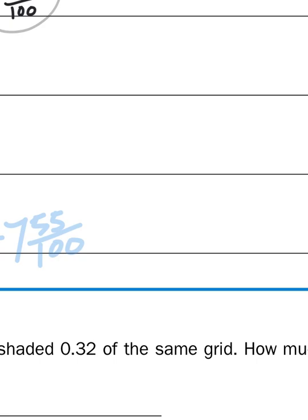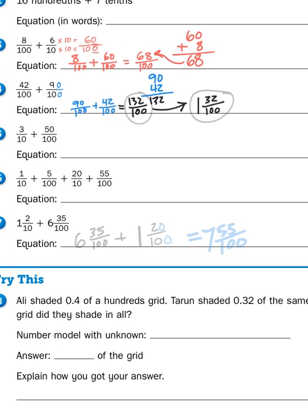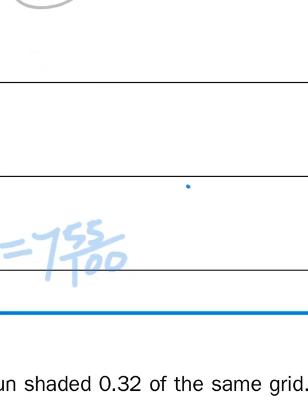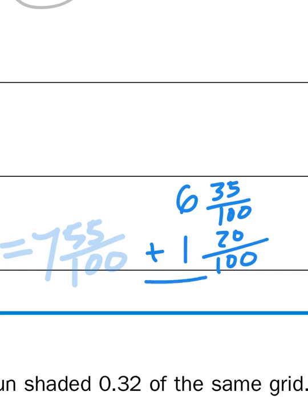Now again, if you didn't do that off the top of your head, you would want to line up your numbers vertically. Six and thirty-five hundredths plus one and twenty hundredths. And again, when I'm adding two fractions together, I just have to pay attention to the numerator. The numerator is what I'm adding when the denominators are the same. So thirty-five plus twenty gives me fifty-five hundredths, and then six plus one is seven.